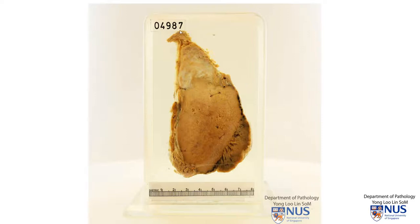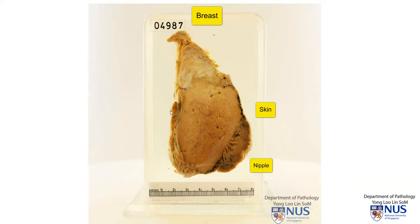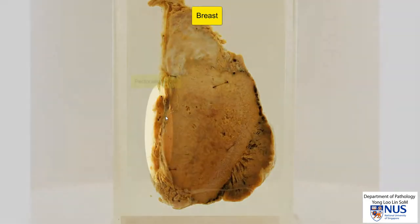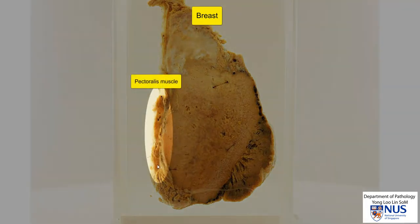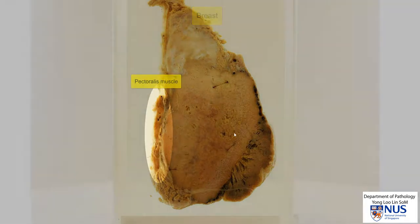Hello, this is a specimen of a breast and we're looking at the cut surface. Let me orientate you. Here is the actual breast parenchyma. Overlying this is the skin and this is the region of the nipple. It is very abnormal here. And deep to this there's a little bit of brownish area which is the pectoralis muscle.